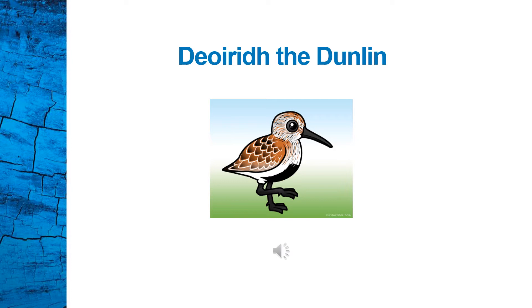'How come I'm not born looking like you?' said Deary to her father. 'When you lose your baby feathers, you will have the same feathers as all the other dunlins — a white belly and brown wings. These have been passed on from me and your mum, from your grandparents, and your great-great-grandparents.' 'Okay dad, I get the point.' 'Yes — you have inherited them, just like you've inherited your knowledge about migration, and the shape, size and colour of your beak and feet.'